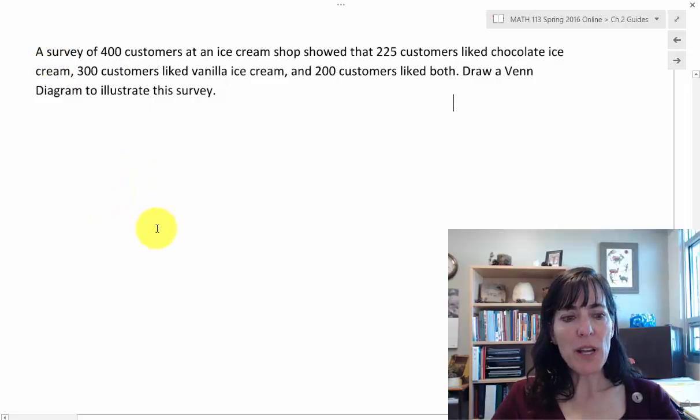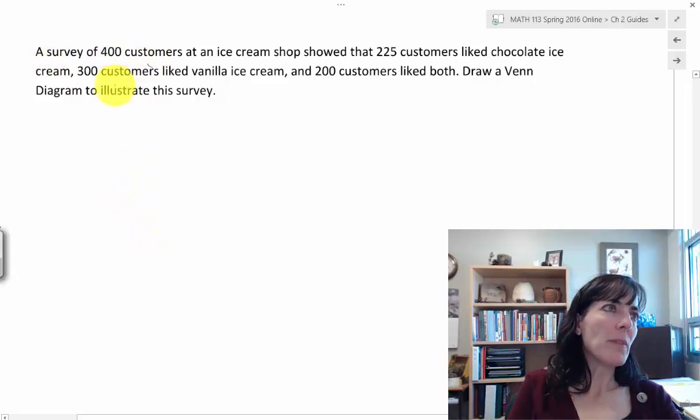A survey of 400 customers at an ice cream shop. The cardinal number for the universe is going to be 400.